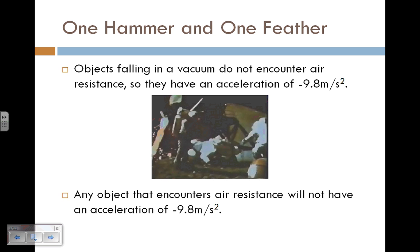As we saw, the hammer and the feather in a vacuum did hit the ground at the same time. It proves that all objects undergoing only the force from gravity will accelerate at that same rate. For objects on Earth they will encounter air resistance, but for our problems we're going to assume there is no air resistance, so we'll use the acceleration of negative 9.8 meters per second squared.